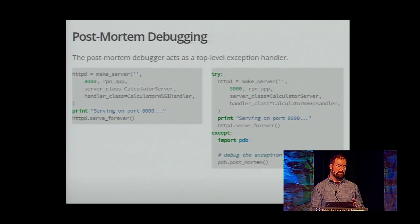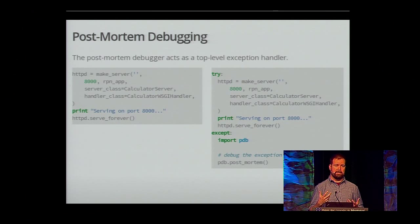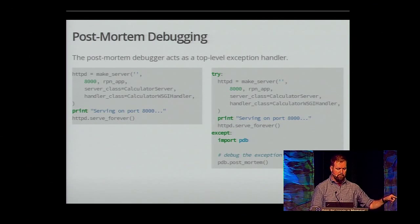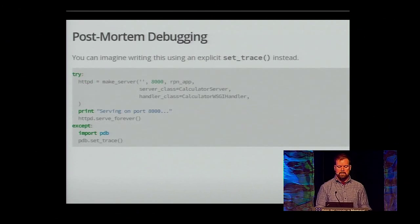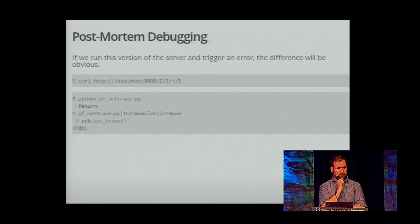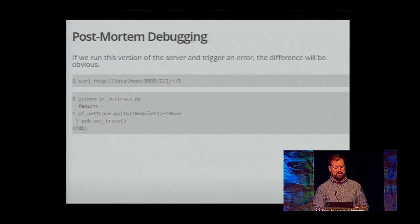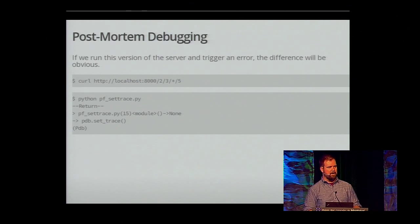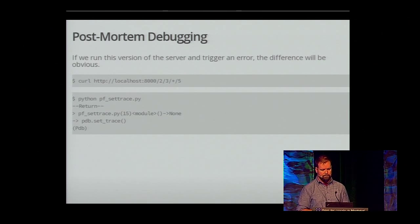If we use set_trace instead of postmortem, we're not going to get what we want. If you'll notice, the point that we stop inside of PDB is actually the set_trace call, not where the exception occurred. At this point, the call to the calculator has already been made, it has failed, it has raised an exception, and all that context is gone. So the postmortem debugger is pretty great.